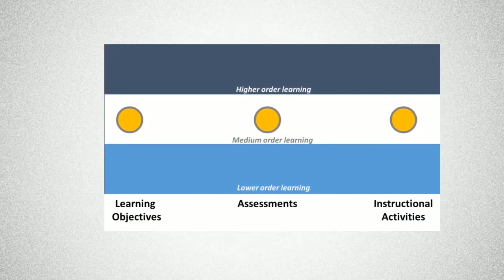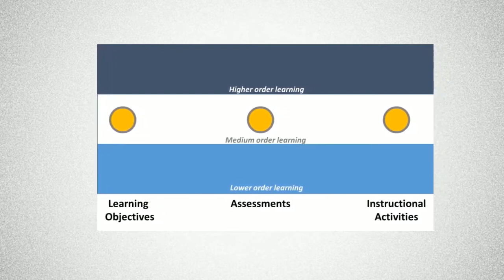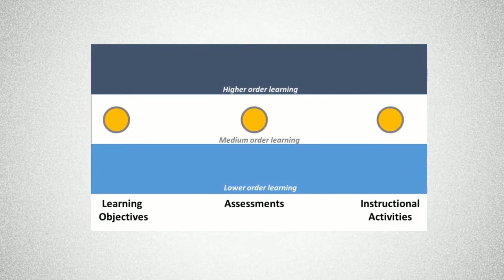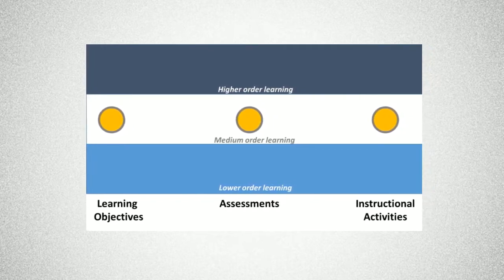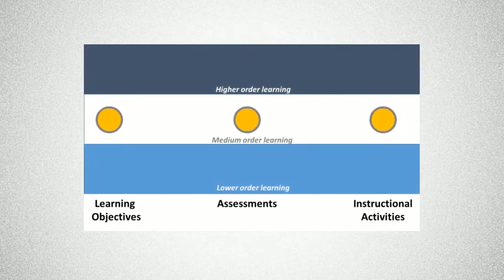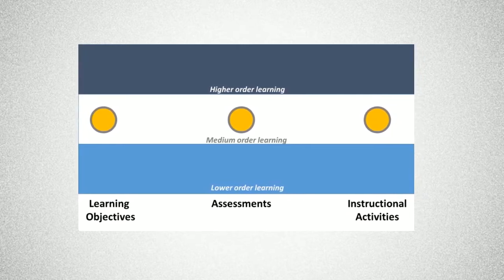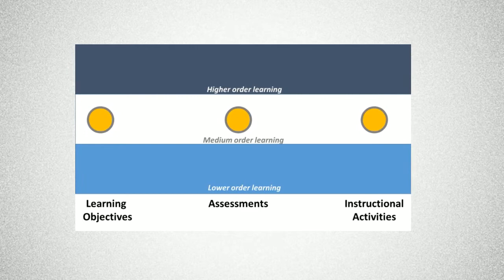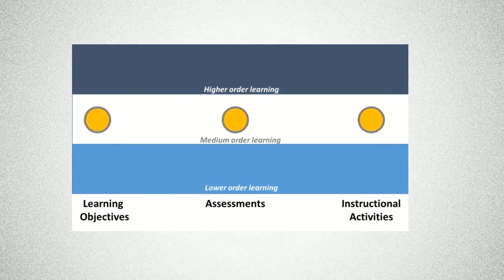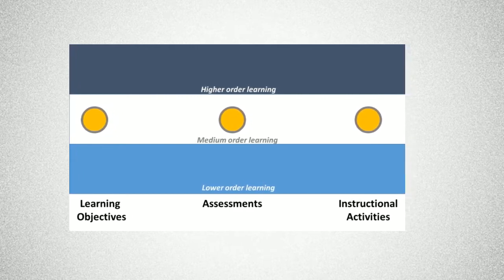Instructional alignment means that there is alignment between your learning objectives, the assessments that measure whether students accomplish those objectives, and the instructional approaches used to help students achieve those goals. Although simple and intuitive, this alignment may not be made as intentional as it should be, resulting in misalignment, which can be common.